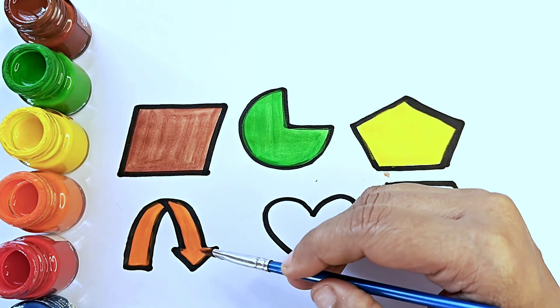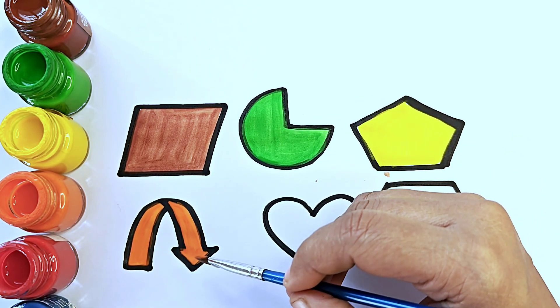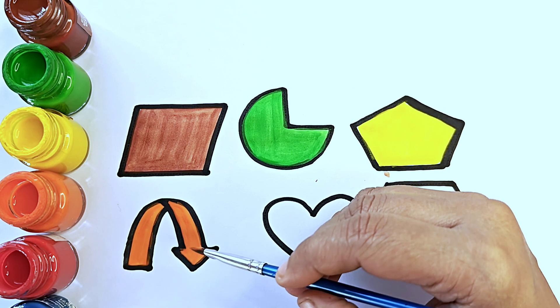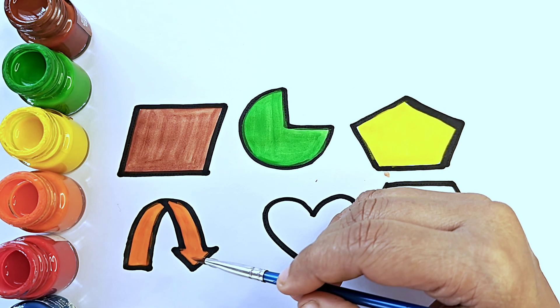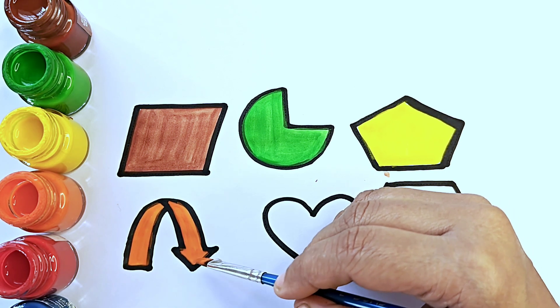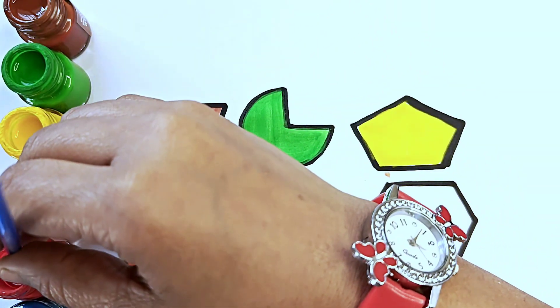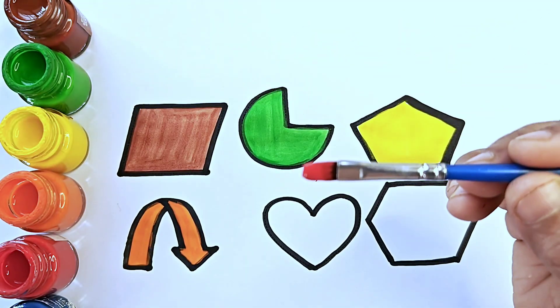Curved down arrow. C-U-R-V-E-D, curved. D-O-W-N, down. A-R-R-O-W, arrow. Curved down arrow. Red color.